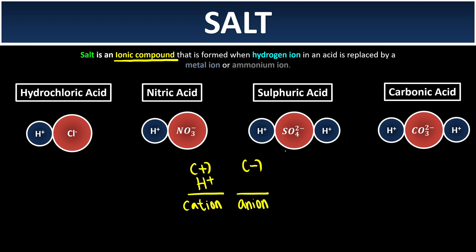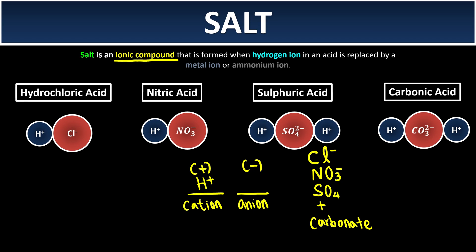The most common anions we're going to study in this chapter can be remembered with a mnemonic: 'chicken nugget sandwich plus carbonated drink.' C stands for chloride ion, N stands for nitrate ion, S stands for sulfate ion, and carbonate is the carbonate ion.